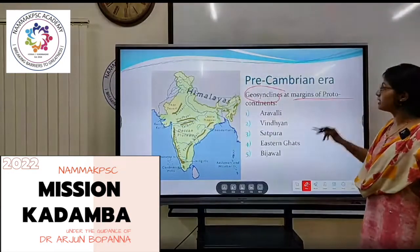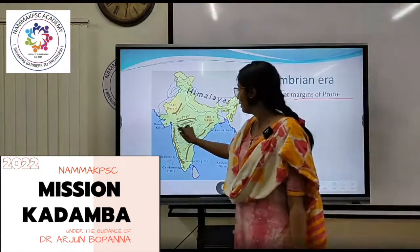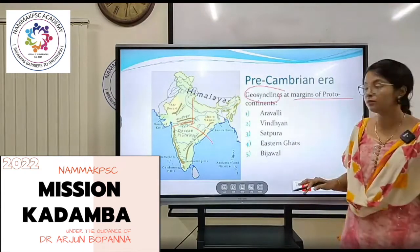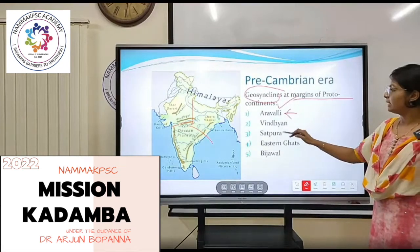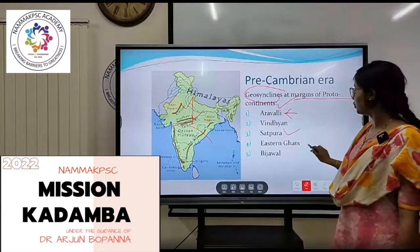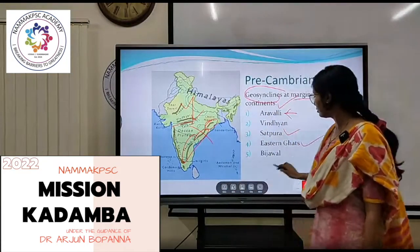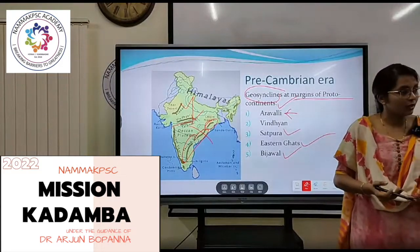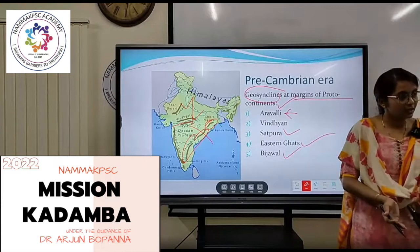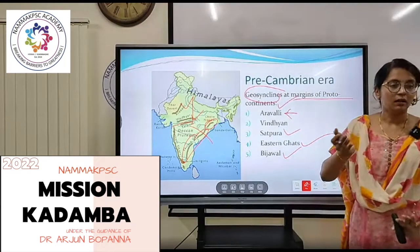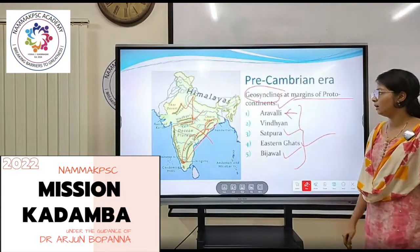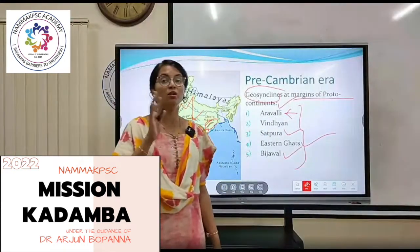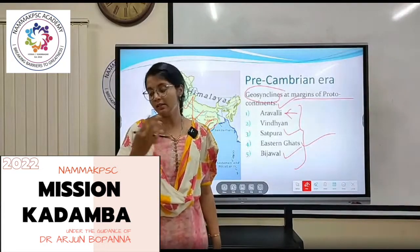The geosyncline forms at the margins of the proto-continent. At the margin of the proto-continent, there will be a geosyncline. At the margin of the geosyncline, we see that mountains like the Aravallis, the Vindhyas, the Satpuras, the Eastern Ghats — these are your Bijawal mountains — were formed because of the upliftment of the terrigenous deposits which were formed during the convergence of the plates, uplifted along the fold mountains. These are your oldest of the fold mountains.